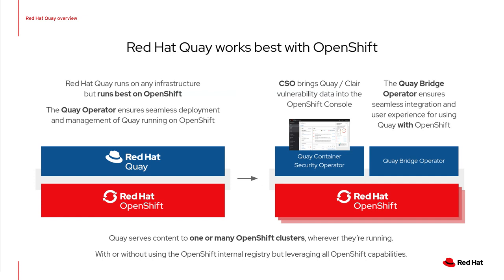Quay is built on a cloud-native architecture and is deeply integrated with OpenShift and Kubernetes. Quay runs on any infrastructure and works with any tools that follow the Open Container Initiative standards. However, running Quay on OpenShift provides additional benefits such as scalability, since Quay can leverage cluster compute capacity to manage expected demand. Simplified networking using diverse ingress options with well-established patterns, and simplified deployment mean you can start using the product immediately with expanded options designed to take advantage of the OpenShift deployment.